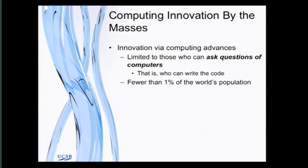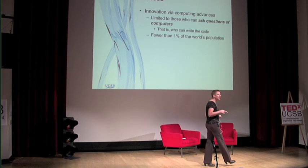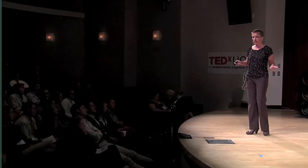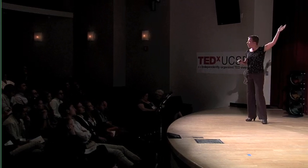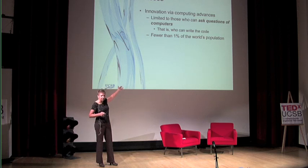So if code and data — code being the way we ask questions of the data — is what makes innovation possible, then let's ask who can ask the questions. The bad news is that the people who can ask the questions right now are the super experts, because the questions have to be written in code, and not a large population can write code. And an even smaller portion of that population can bring to bear warehouses of computers. So if that's all that we have to innovate, we're in trouble. Less than one percent of the population is able to innovate with computers if this is the only way.